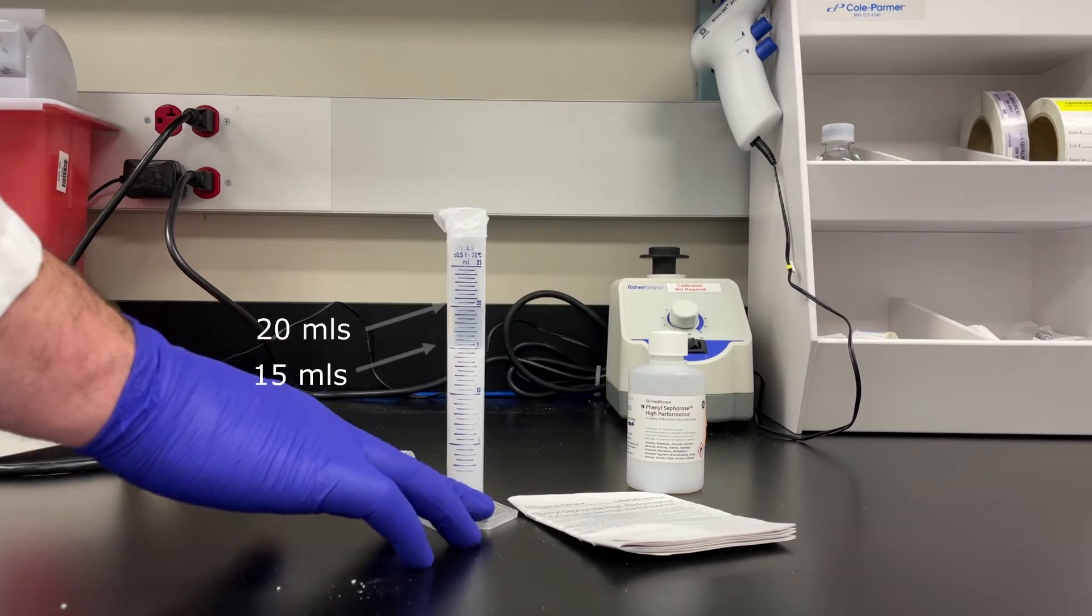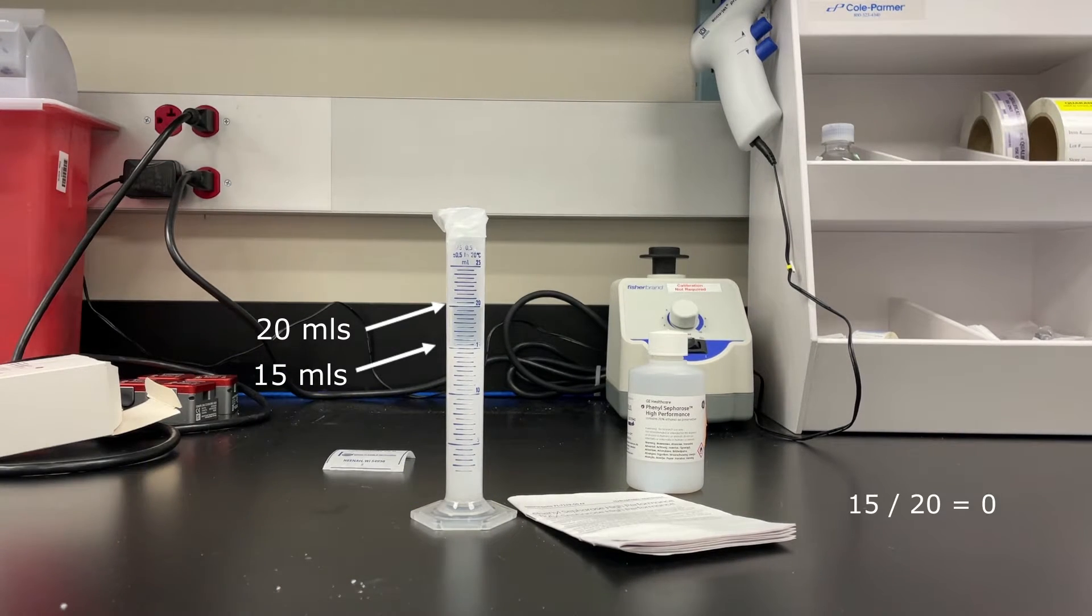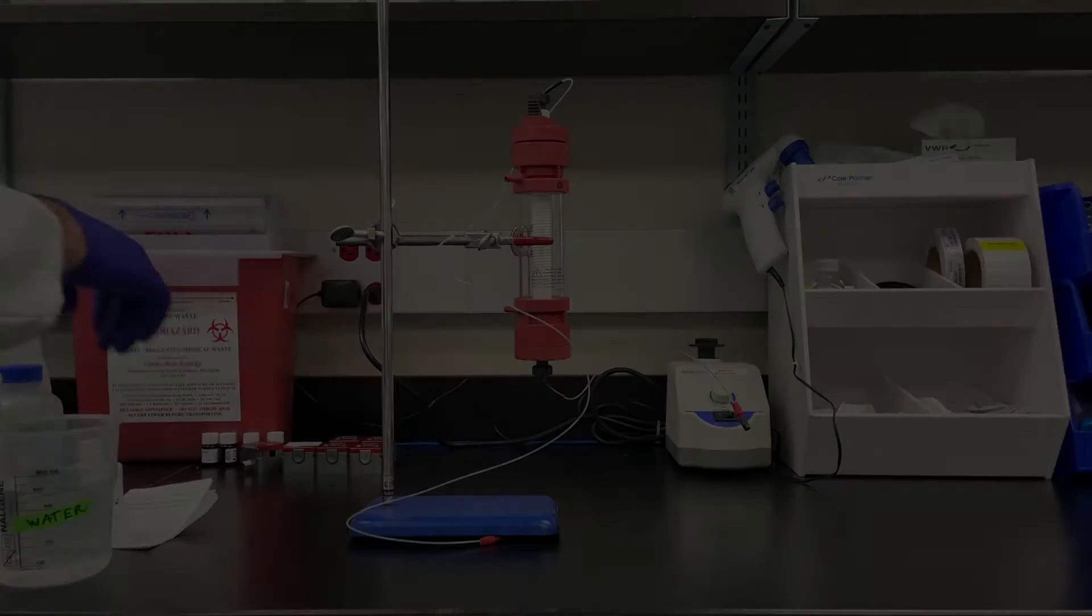The graduated cylinder sat overnight. We can see that the resin settled to 15 mils and the liquid is up to 20, which means it's a 75% slurry.